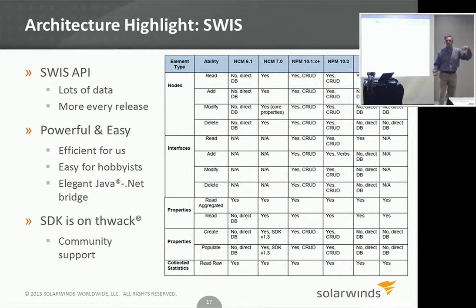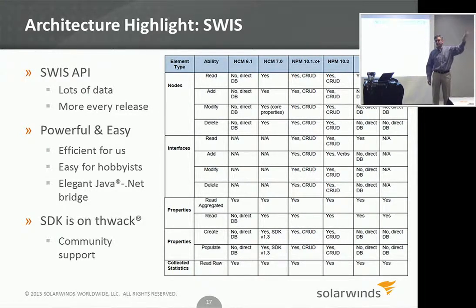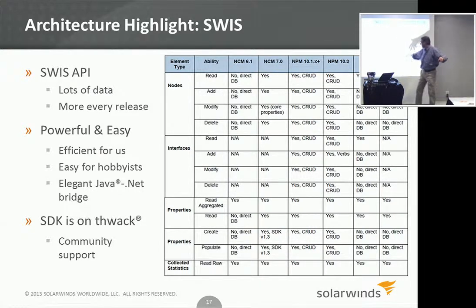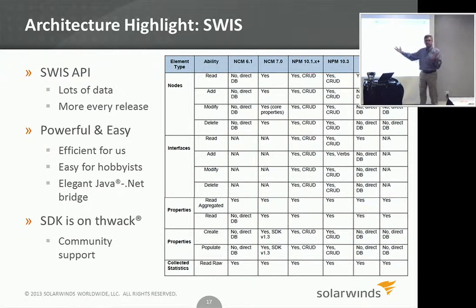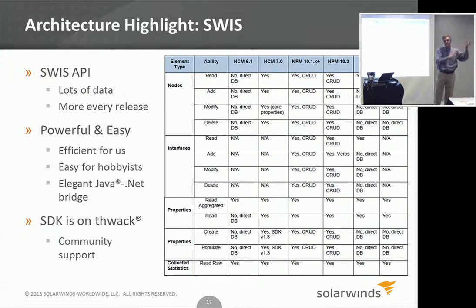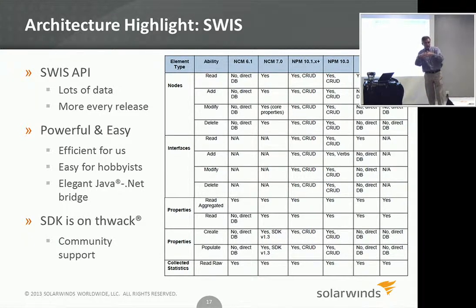Other people have an inventory or provisioning system that doesn't have discovery. They have a repository which is manually updated, and they actually use Orion's discovery to automatically discover those objects. They generate a list of what Orion has discovered, correlate the two, and that's a way to easily update their manual repository.